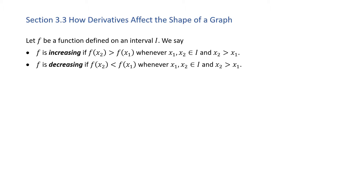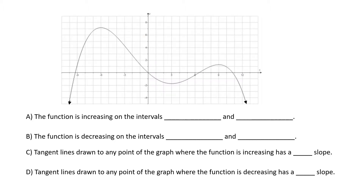Raise your hands if you have no idea what I just said — I can't see you, but I'm going to assume a few went up. Let's look at what that means. We're going to look at this graph to determine the intervals where the function is increasing, which happens where the graph is rising, or decreasing, which happens where the graph is falling. The graph is rising if you move from left to right and the graph gets taller and taller. Since the graph is rising on that interval, we say that the function is increasing.